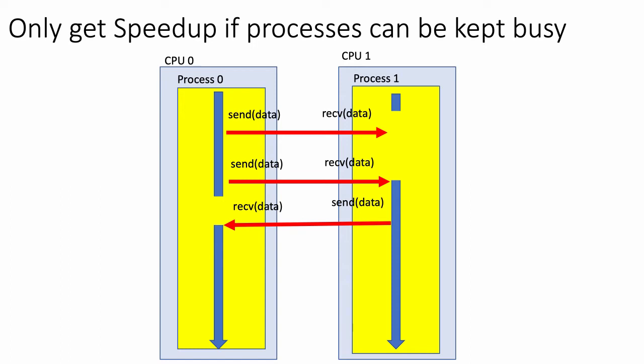Now we only get speed up if the processes can be kept busy. The previous example would scale perfectly. Now we've got a problem. We have process one doing some computation, and then he can't proceed until he gets the second bit of information from process zero. Process zero sends the information, does a little bit more work, and then he's stuck waiting for information from process one before he can continue. So this is now where we're going to start losing performance. We're no longer going to get linear speed up. We have to wait for these processes to do the communication.